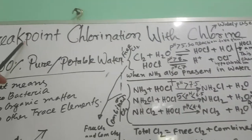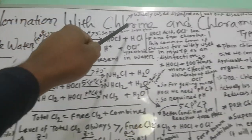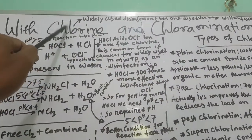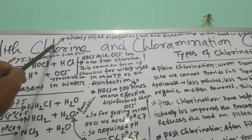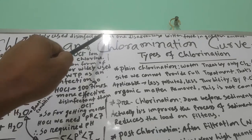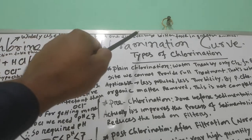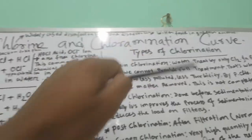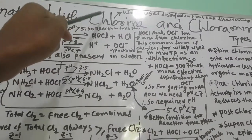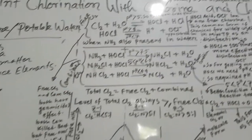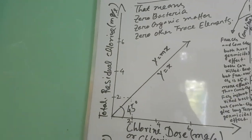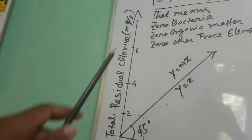I will discuss about breakpoint chlorination with the help of the chlorine and chloramination curve. We know chlorine is a widely used disinfectant, but one disadvantage is a bitter taste when added in greater amounts. When less chlorine is used in water, the taste will be better.